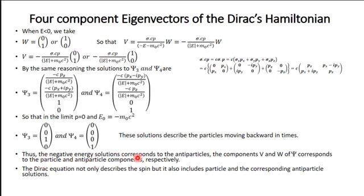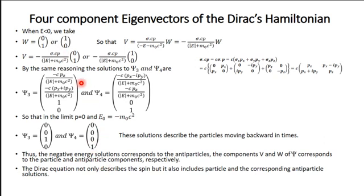These negative energy solutions describe a particle moving backward in time starting from minus m-naught c-squared — they correspond to antiparticles. The components V and W of psi correspond to particle and antiparticle components respectively. The Dirac equation not only describes spin but also inherently includes both particle and antiparticle solutions. In the next lecture we will discuss the significance of the negative energy solutions. Thank you very much.